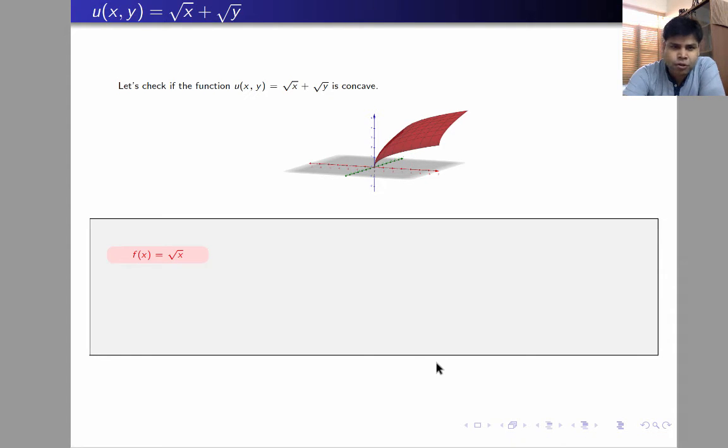So notice that f(x) is equal to root x is a concave function. That is something that we have already shown in the previous video. So by domain extension, if you're going to just add an argument y to it, it will stay concave. So u₁(x,y) equal to root x will be a concave function.